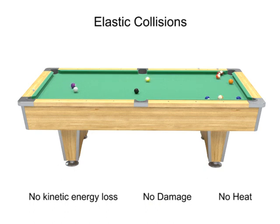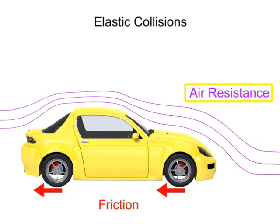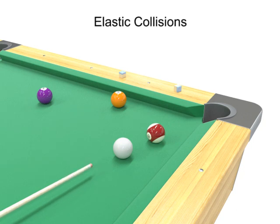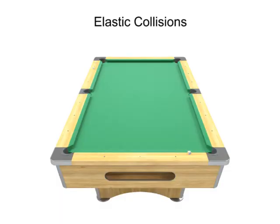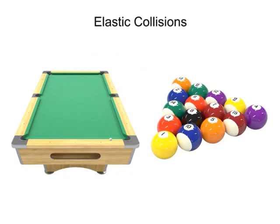In the real world, no collision is perfectly elastic because so many other forces come into play, like friction, air resistance, and gravity. However, the game of pool offers a fairly good elastic representation. Pool tables and billiard balls are designed to reduce the effects of friction, resulting in close to ideal elastic collisions.